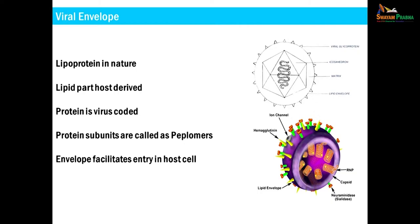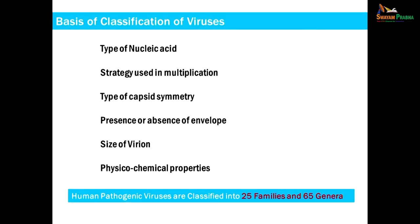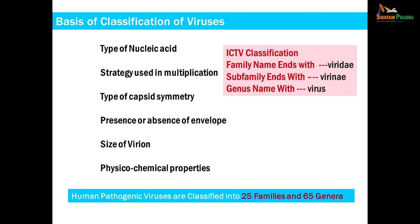Coming to the classification of viruses — viruses are classified on the basis of various factors: the type of nucleic acid, the strategy used in multiplication, the type of capsid symmetry, whether an envelope is present or not, the size of the virion, and various physicochemical properties. According to the International Committee on Taxonomy of Viruses, the family name ends with 'viridae', the subfamily name ends with 'virinae', and the genus name ends with 'virus'. Human pathogenic viruses have been classified into 25 families and 65 genera.